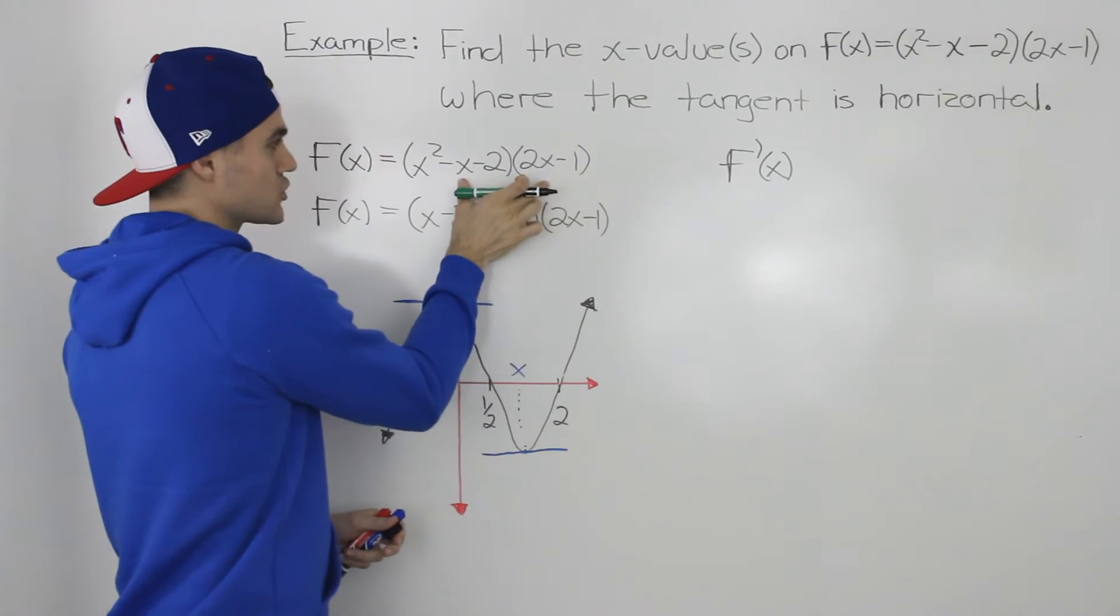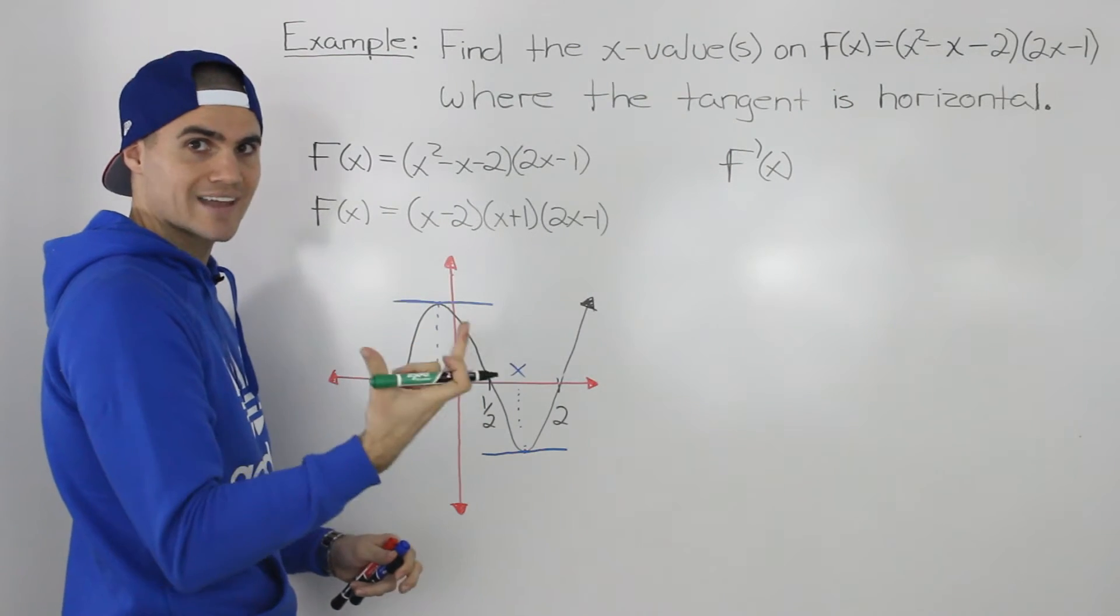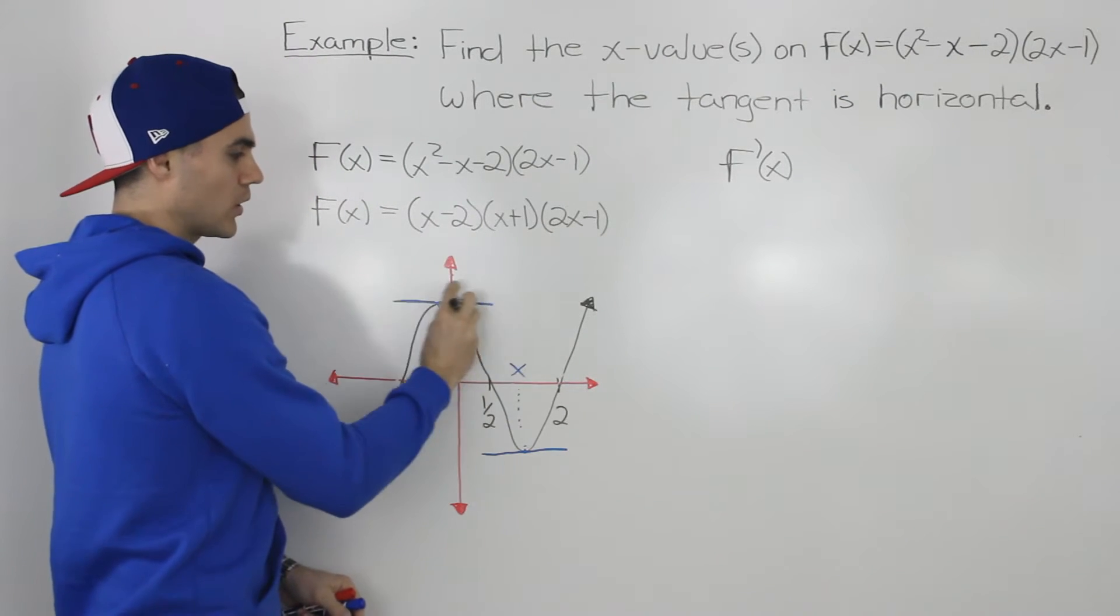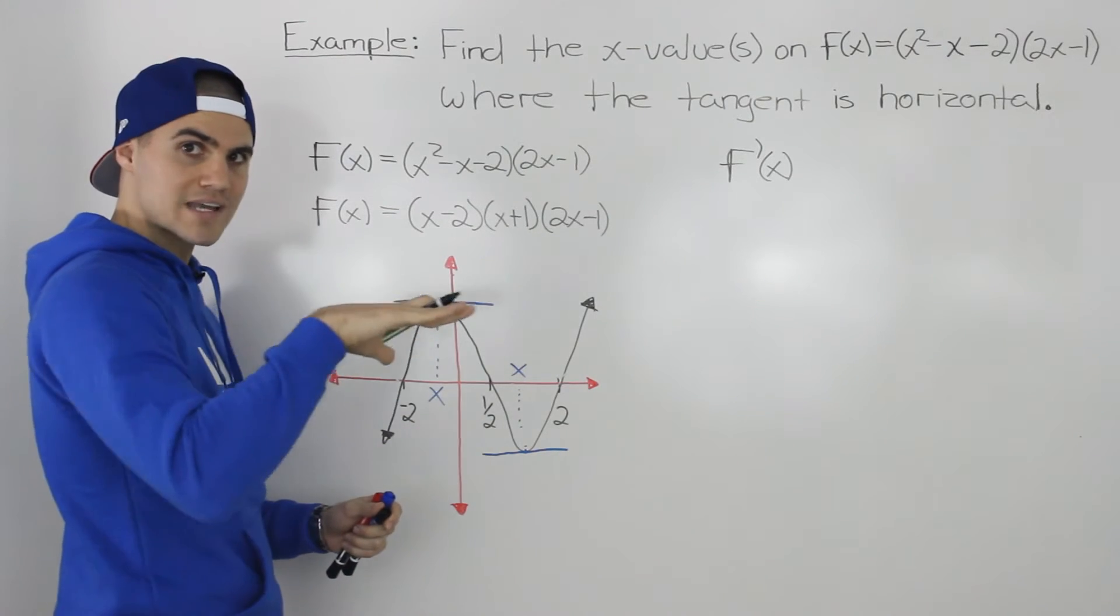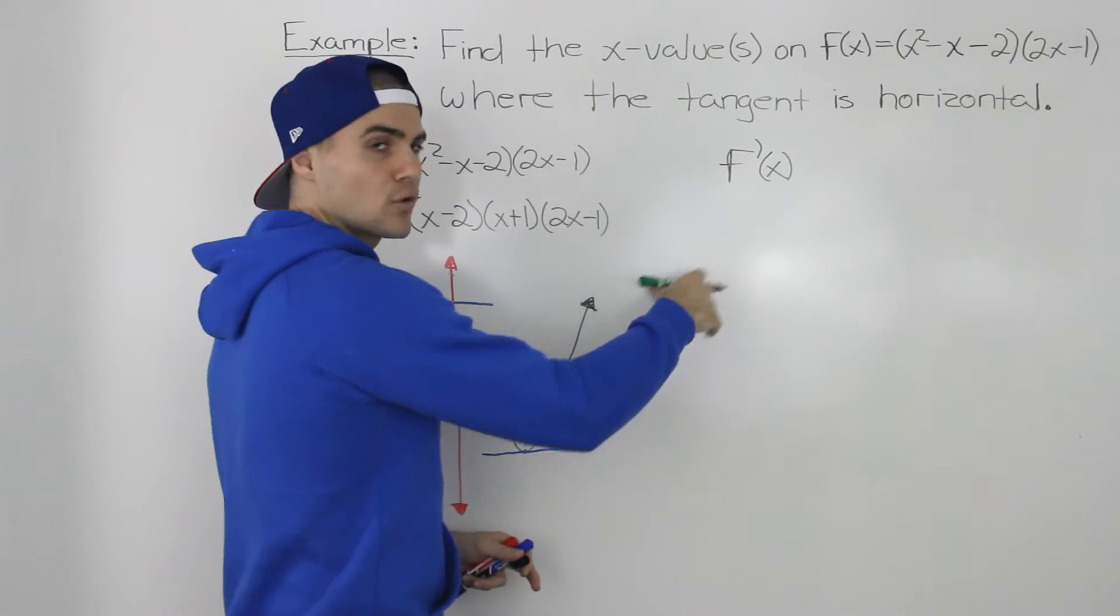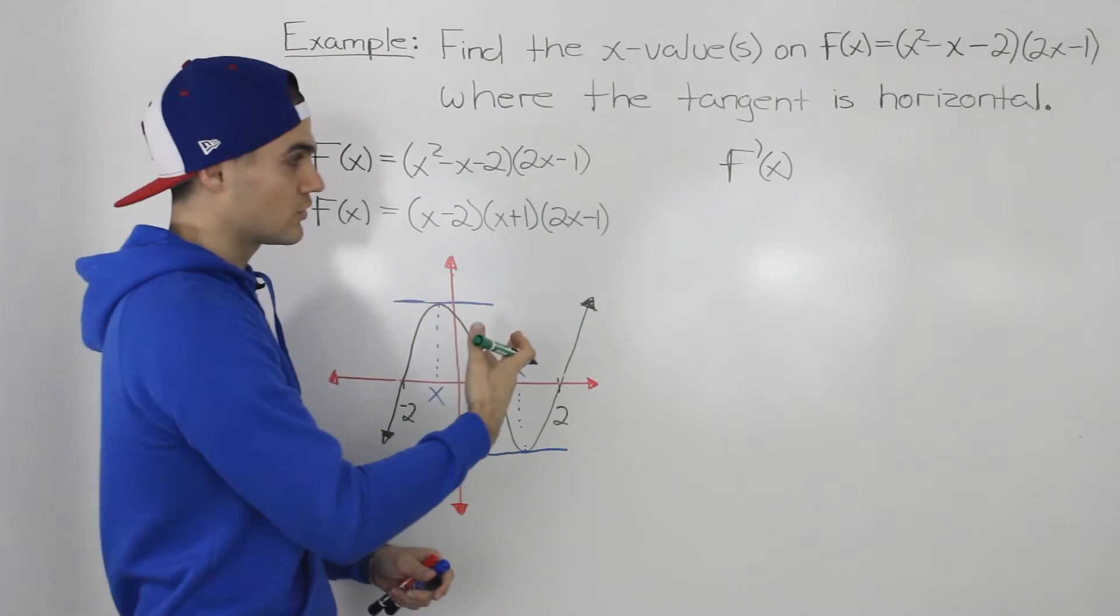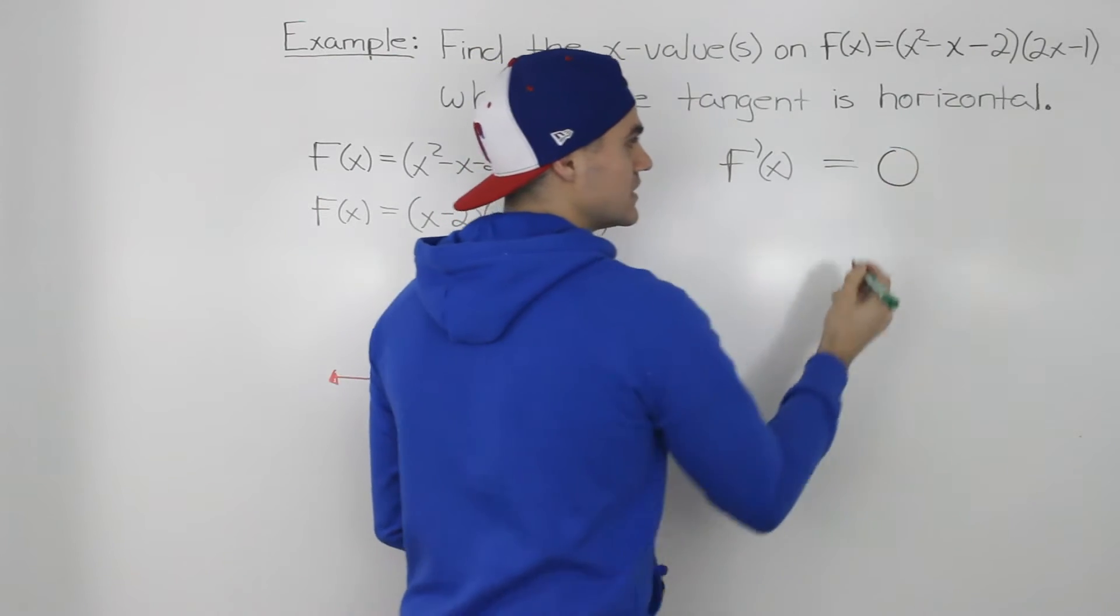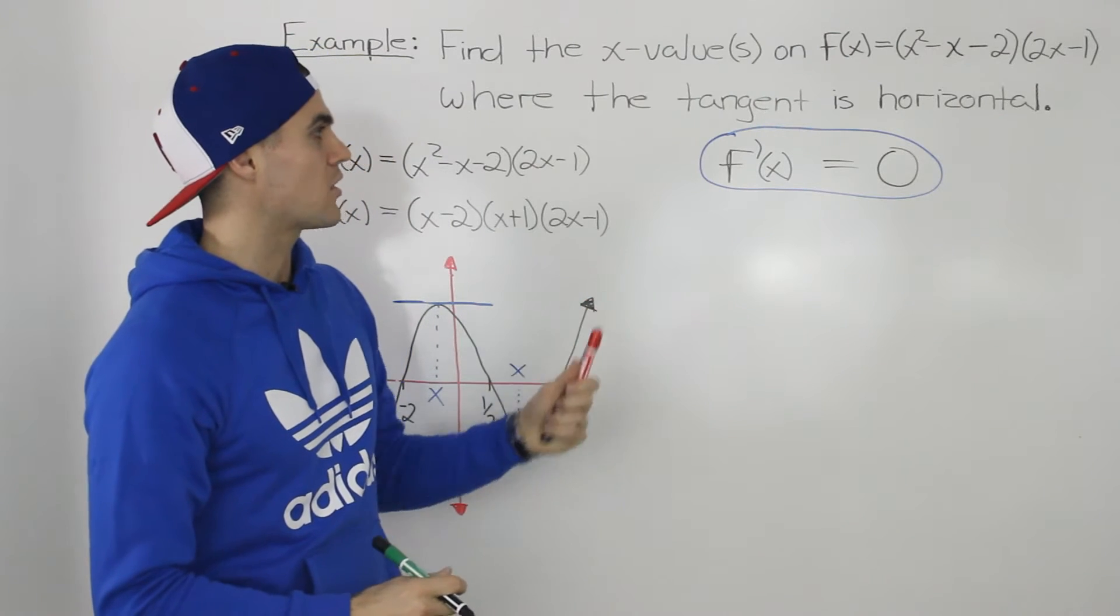If we can find the derivative of this function, then we can plug in any x value on the function and find the slope of the tangent at that specific x value. But we are looking for the x values where we're going to have a horizontal tangent. And a horizontal tangent, a horizontal line, always has a slope of 0. So we're looking for the x values for which the slope of the tangent is equal to 0. So we know that we're looking for the x values where the derivative is equal to 0. So this equation here is what we're going to have to solve to get the answers to this problem.